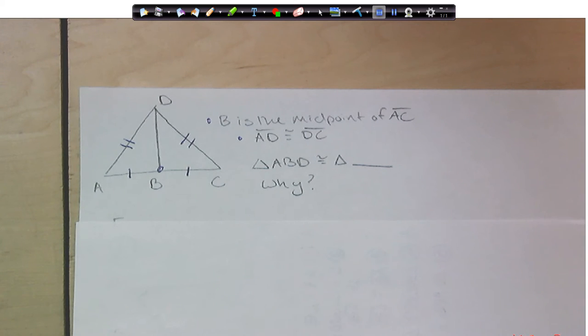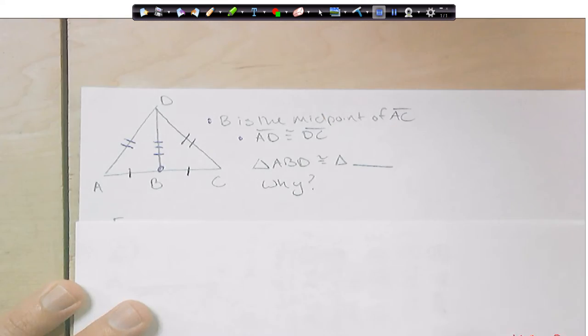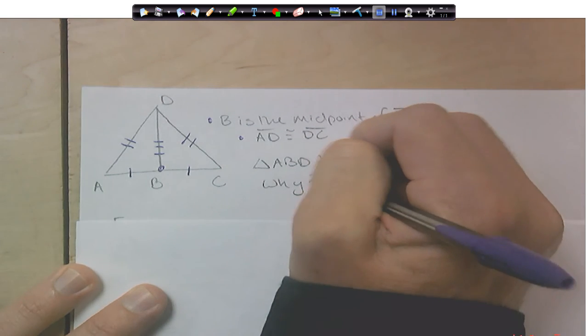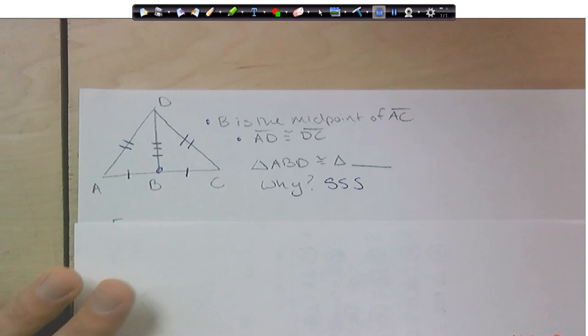And last but not least, I should look at this, and whenever we share a side, we always know that those two sides are going to be congruent. So I know those two sides are congruent because they're sharing it. So I have side, side, side. So why, all you have to do for the why is use one of our four reasons. In this case, it's side, side, side. And then we've got to make sure we match everything up.